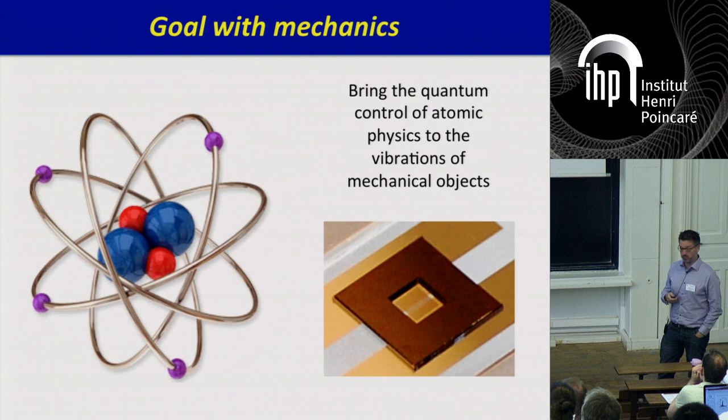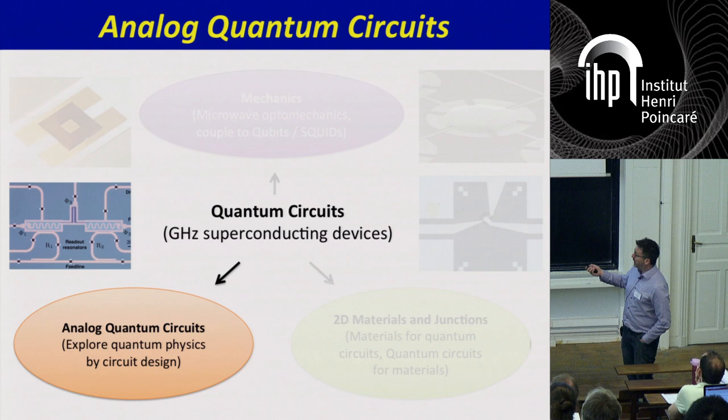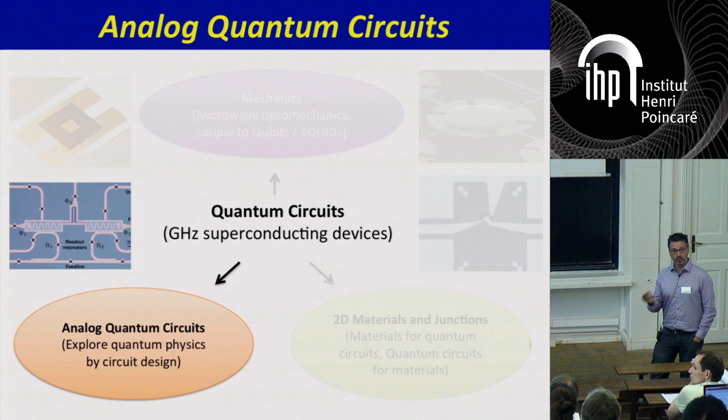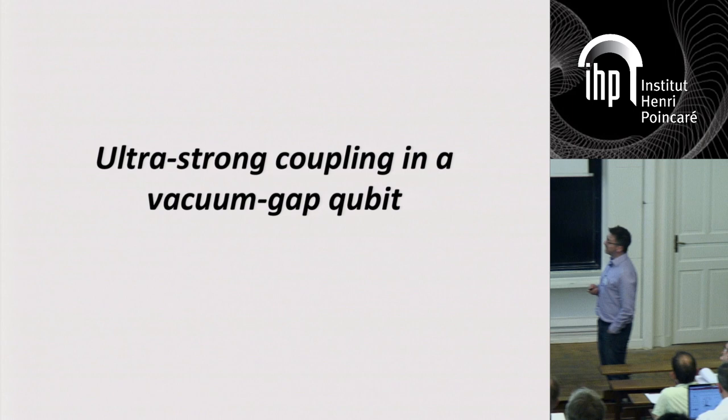Today I'll tell you about a topic we're working on in a related part of the group, where we use quantum circuits more to do analog quantum engineering — playing around with Hamiltonians by designing circuits in a clean room. This is the topic of ultra-strong coupling in a vacuum gap qubit.